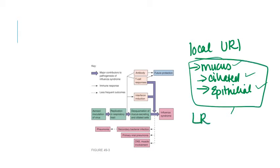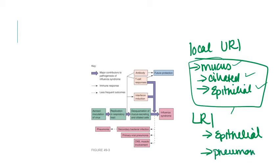Flu can also cause lower respiratory infections, causing severe desquamation of the bronchial or alveolar epithelium, potentially wearing it down to a single-cell basal layer or the basement membrane. This significantly increases the risk of developing pneumonia — a serious complication that occurs in many people each year. A classic presentation: a patient gets the flu, starts to feel better, then suddenly feels much worse because they've developed pneumonia from a secondary bacterial infection that has penetrated the broken epithelial layer.